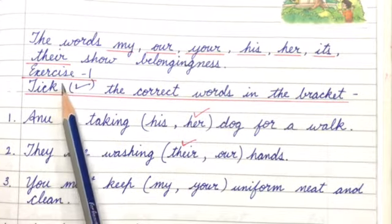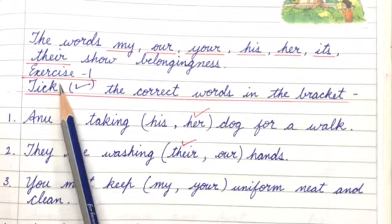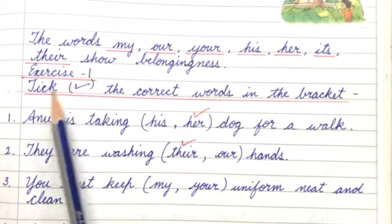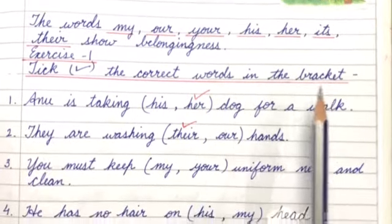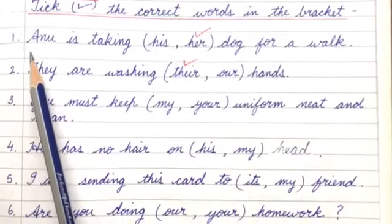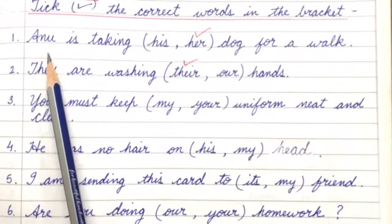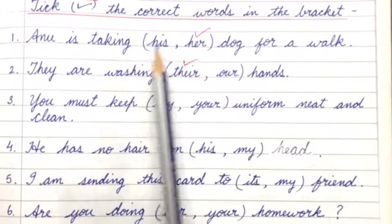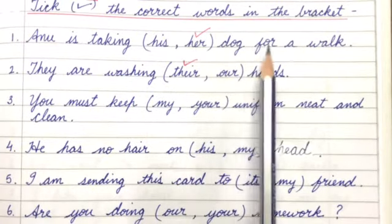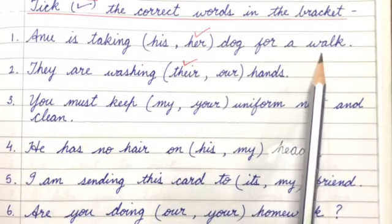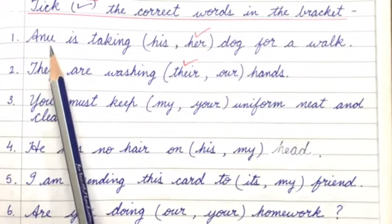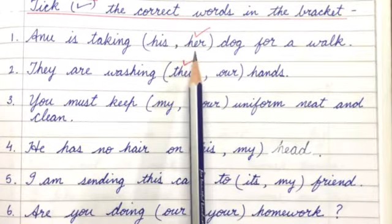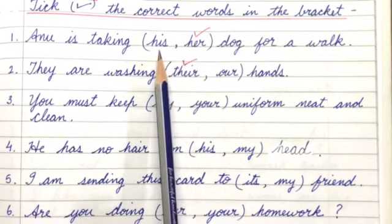Now, children, let us take up a few exercises. Exercise number 1: Tick the correct word in the bracket. Number 1: Anu is taking her dog for a walk. Children, Anu is a girl. That is why we tick mark 'her' and not 'his'.